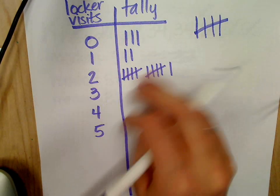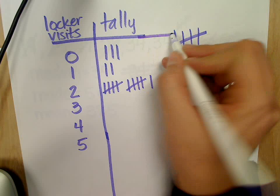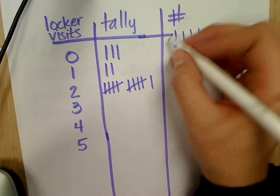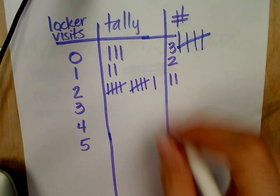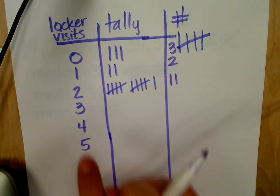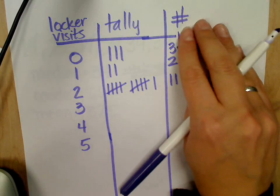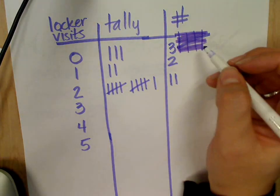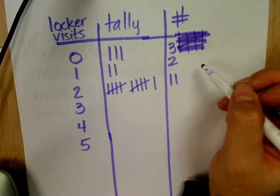So you continue, and this is what you call a frequency table. If you wanted to add an extra row, this could be the number - you would just write the number. So that would be three, that would be two, this would be eleven. But all I'm going to make you do is your locker visit number, number of times, and then the tallies. The last column is an option - it might make it easier when you're trying to answer the questions so you don't have to keep counting how many tallies you have.